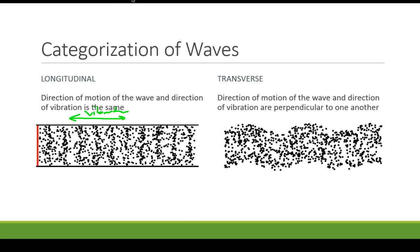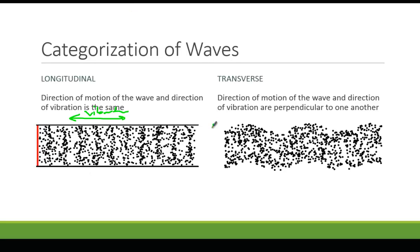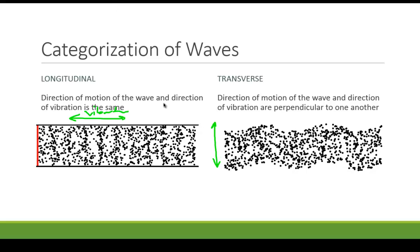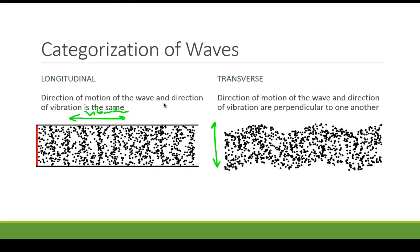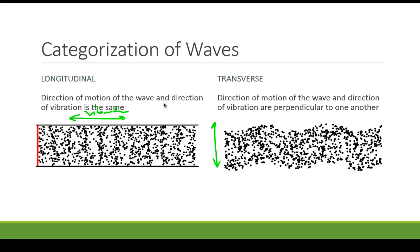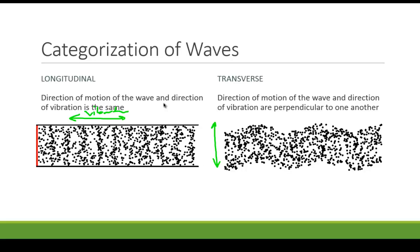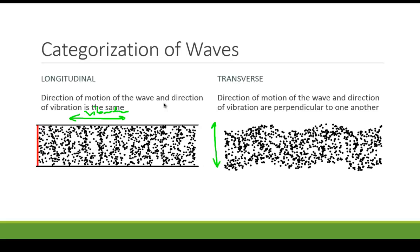With the transverse wave, the direction of vibration is up and down. However, the direction of motion of the wave is still left to right. So we have different ways of categorizing waves based on this direction of vibration compared to the direction that the wave is traveling.